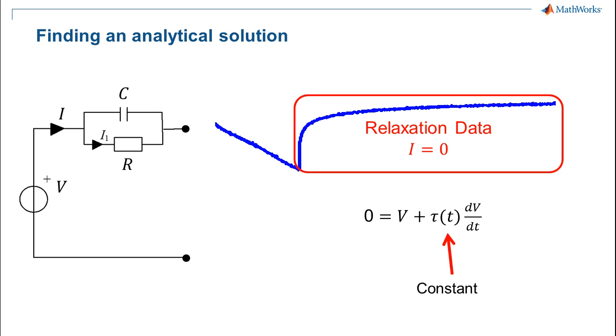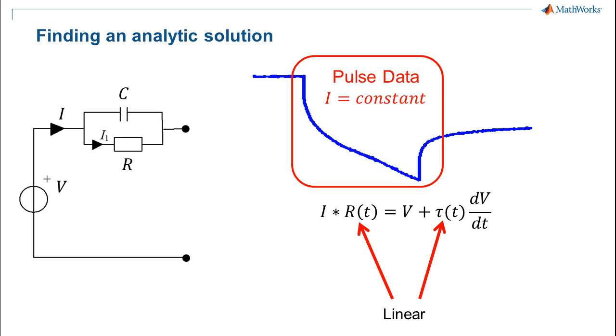The technique for determining initial parameter values was a two-step process based on the analytical solutions of the equations governing RC circuits. Since the voltage drops across each RC branch are additive, we can analyze the branches one at a time. The first step made use of the fact that SOC was constant during the relaxation period, and therefore so were the time constants. This equation is well known to have an analytical solution. The second step made use of the fact that the resistances and time constants vary linearly with time during the pulses. When the resistances and time constants are linear functions, this equation also has an analytic solution, though its structure is more complicated.